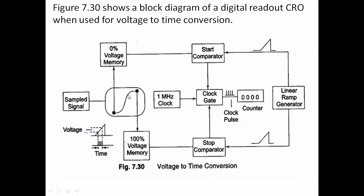Here there is another component — the linear ramp generator. In the previous case, we used a voltage divider; here we use a linear ramp generator. A step converter is used along with a start comparator and stop comparator. The start comparator compares the 0% voltage memory signal with the linear ramp generator output.